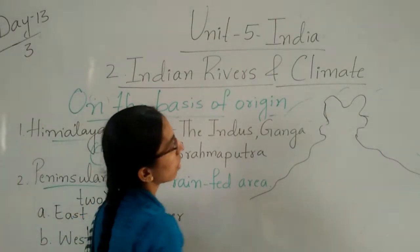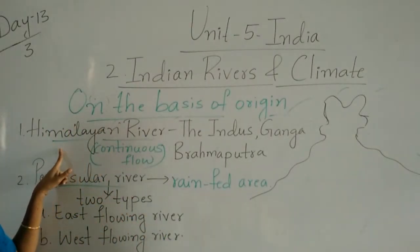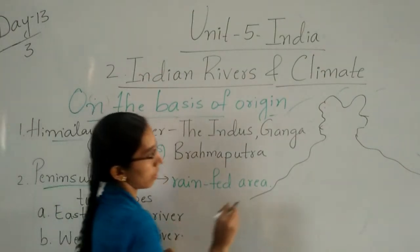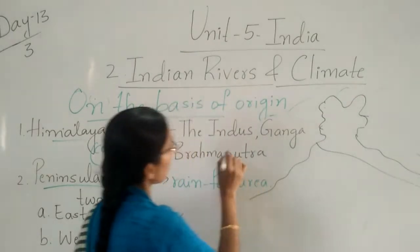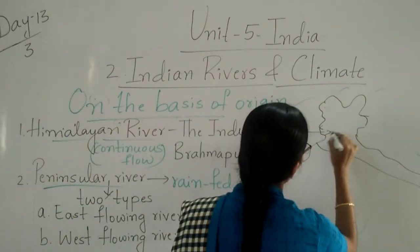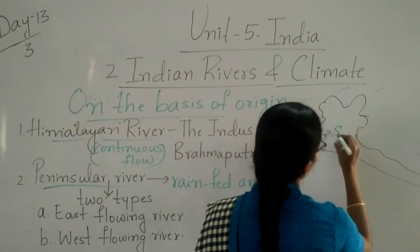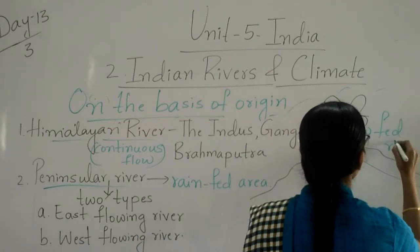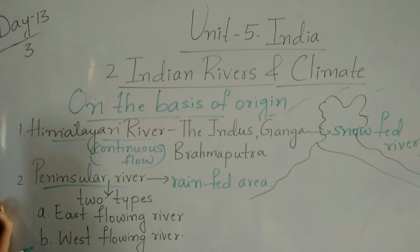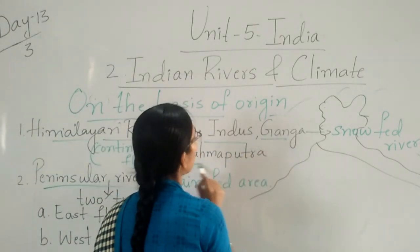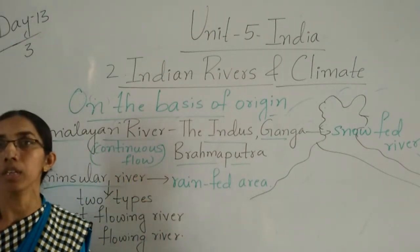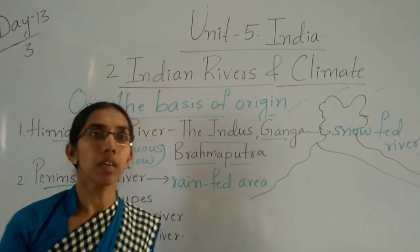On the map you can see the rivers that originated in the Himalayas — those are called Himalayan rivers, and they flow continuously. They are Indus, Ganga, and Brahmaputra — called snow-fed rivers. They get continuous water. Later we will discuss in detail: the origin, how they flow, what are the tributaries and distributaries.